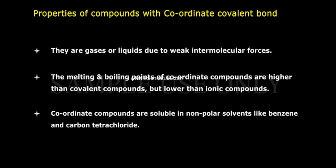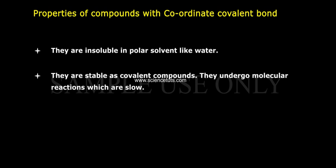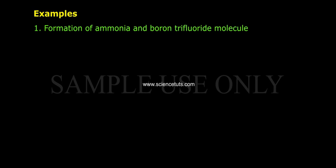Coordinate compounds are soluble in non-polar solvents like benzene and carbon tetrachloride. They are insoluble in polar solvents like water. They are stable as covalent compounds. They undergo molecular reactions which are slow. They exhibit isomerism due to the directional nature of the bond.